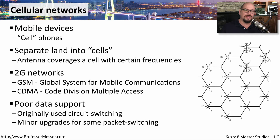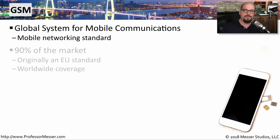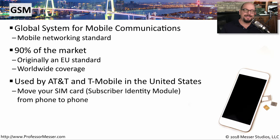To be able to perform some type of data or packet switching, we needed newer standards that would support these newer ways to communicate. Let's start by looking at GSM, the Global System for Mobile Communications. This had about a 90% coverage in the market, and that's because it was a standard almost everywhere in the world. In the United States, AT&T and T-Mobile were big providers of the GSM standard.